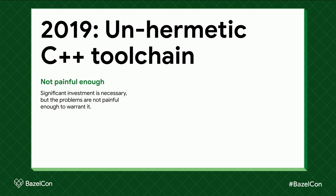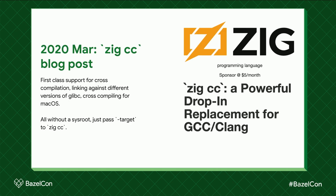Unfortunately in 2019 the ecosystem for hermetic C++ compilers was not there, and it didn't hurt enough for anyone to invest serious time and resources into it. Fast forward to March 2020: Andrew Kelley, the creator of the Zig programming language, wrote a blog post announcing zig cc — a drop-in replacement for gcc and clang. Among other features it boasts first-class support for cross-compilation, support for linking against different versions of glibc, and it can even build macOS binaries. Additionally, it does all this without you having to manage a sysroot — you can download a single small archive and use it to compile code for different architectures, operating systems, and Linux distributions. This makes it a very compelling candidate as a hermetic C++ compiler for Bazel.